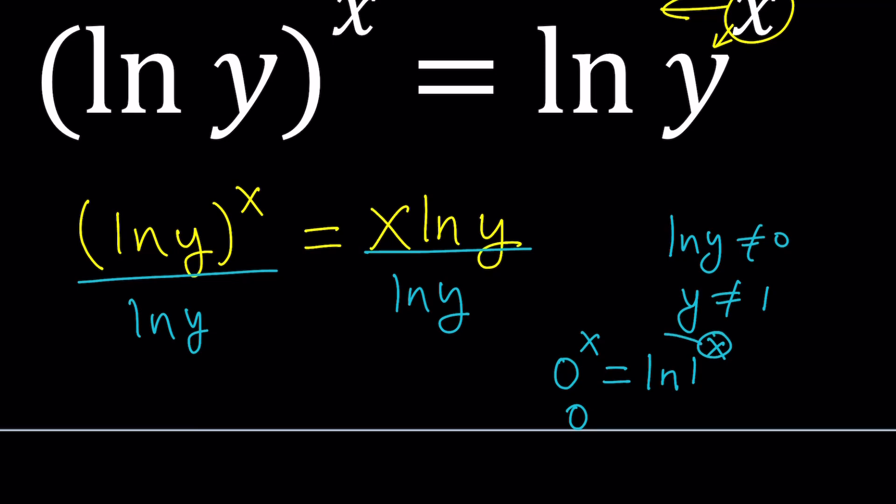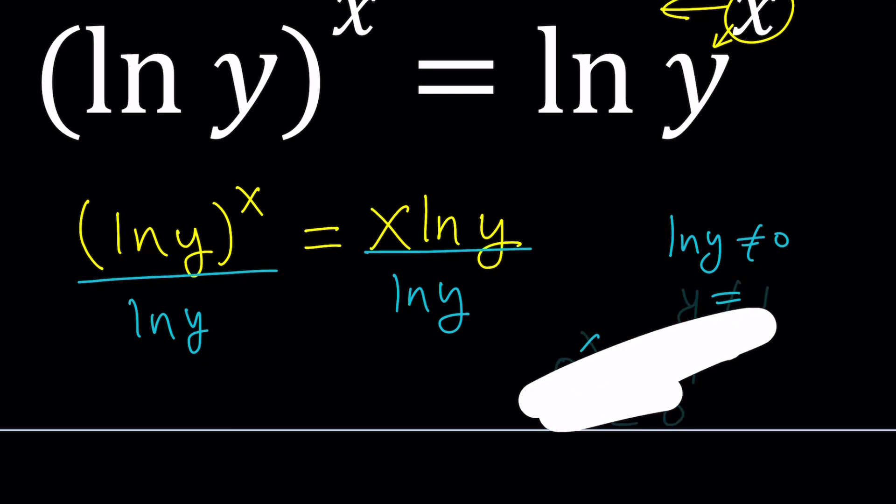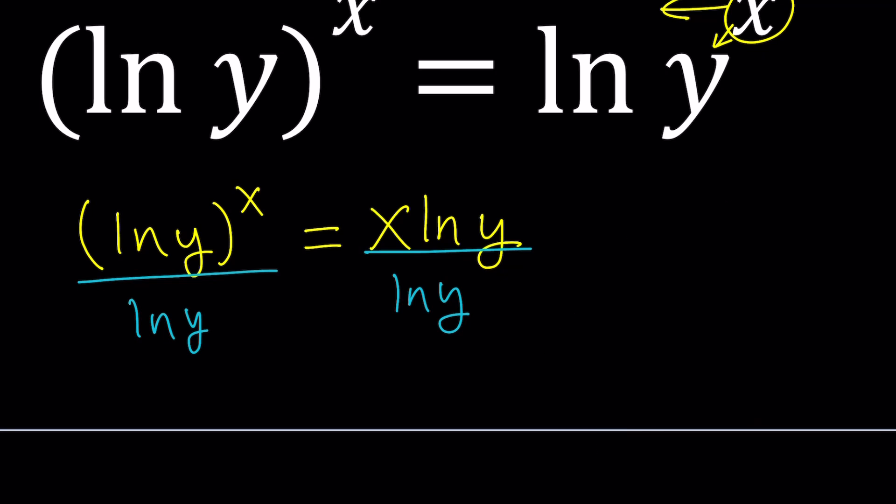And if you bring this x to the front, you get x ln 1, which is 0. Again, if x is not, well, even if x is 0, I think this is going to work. So looks like y equals 1 is a valid solution. But now, for now, we need to assume y does not equal 1, so that we're not making anything undefined.